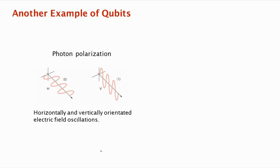It turns out that photons have this property called polarization, which carries a qubit of information. Here's a way to understand this — it's sort of a semi-classical interpretation. Light is electromagnetic radiation, so you think of it as being carried by an electromagnetic wave.